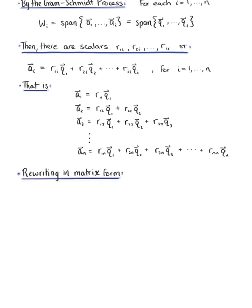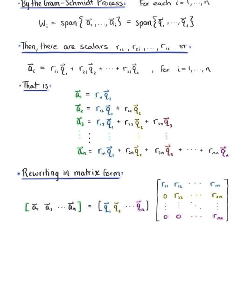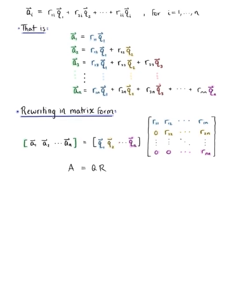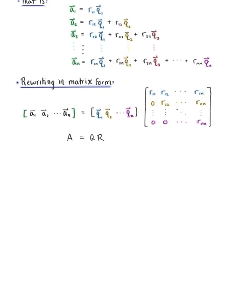We can now rewrite this in equivalent matrix form. The matrix whose column vectors are A sub 1 through A sub n equals the matrix whose column vectors are Q sub 1 through Q sub n, multiplied by the upper triangular matrix whose scalars are R sub 1i through R sub ii. Which gives us exactly matrix A equals matrix Q multiplied by matrix R — exactly what we were looking for!